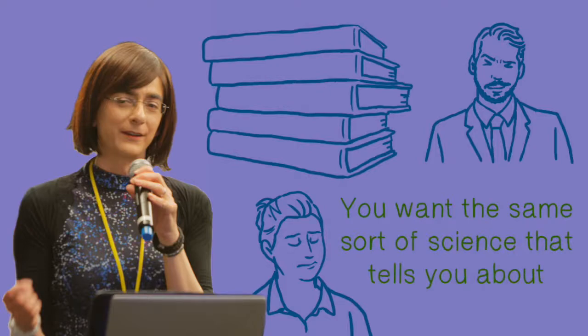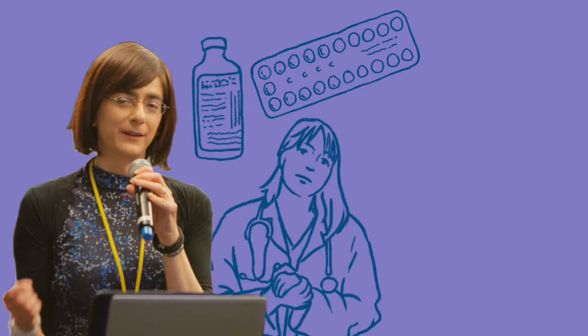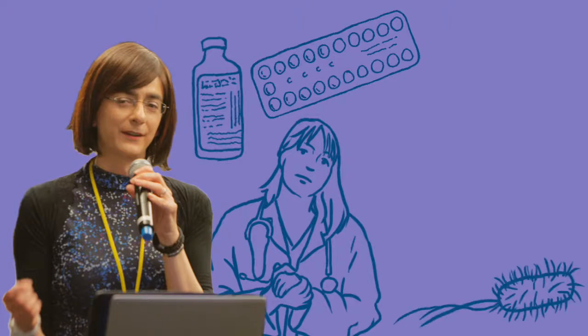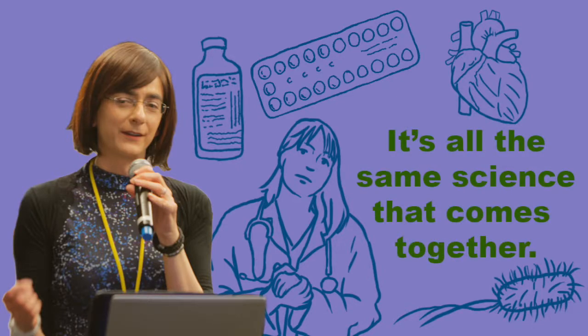You want the same sort of science that tells you about gender and sex, because it's all about genetics and understanding how bodies develop. How can we develop treatments for people that need to have genetic diseases overcome? Other things such as if you're worried about disease-resistant bacteria, or having a heart transplant, or an artificial heart, or any of these things - it's all the same science that comes together.